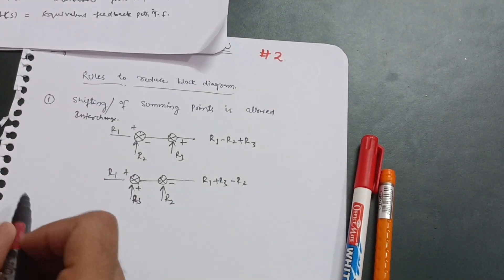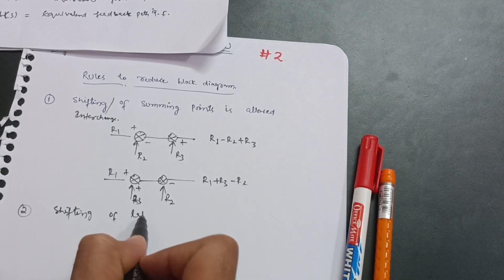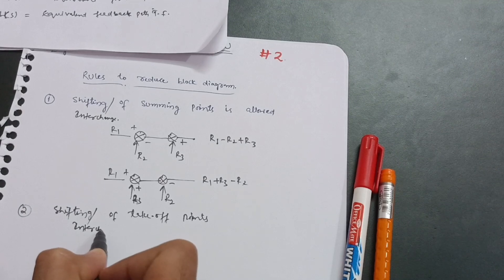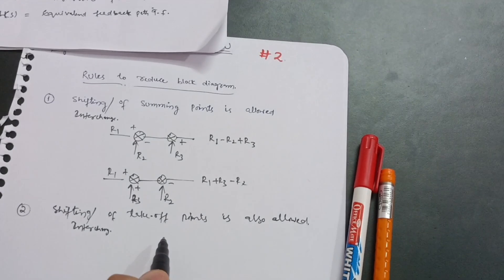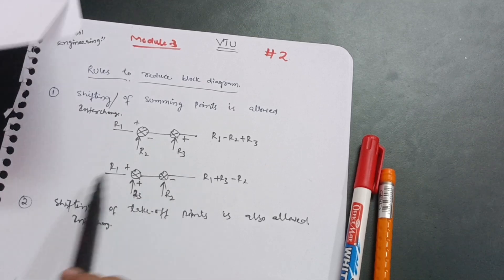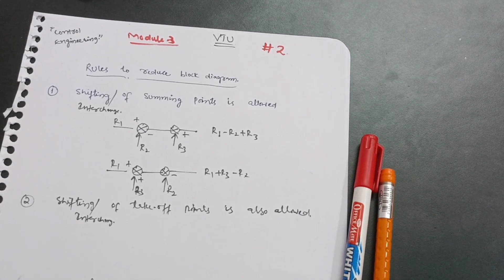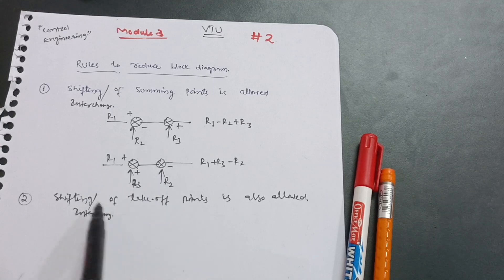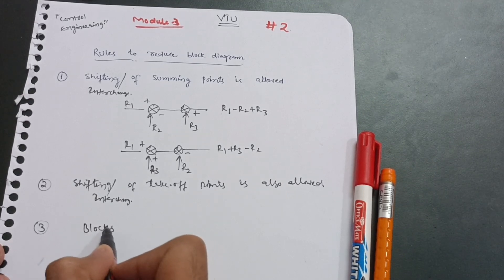The second rule is the shifting or interchange of takeoff points — interchange of takeoff points is also allowed. As we came across in the previous lecture, summing points and takeoff points were explained. So shifting of summing points and shifting of takeoff points are both allowed in block diagram reduction. This will be crystal clear later on when I solve the problems.